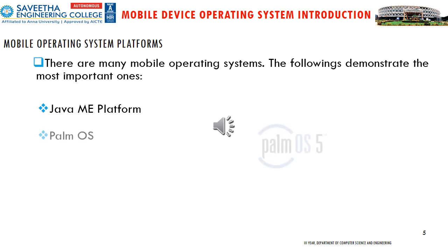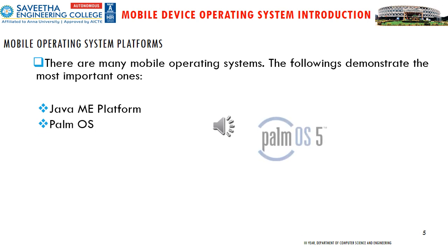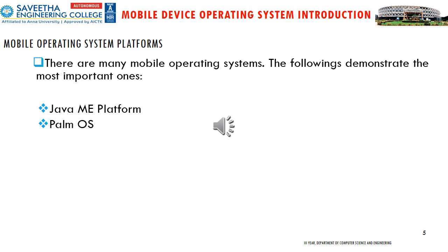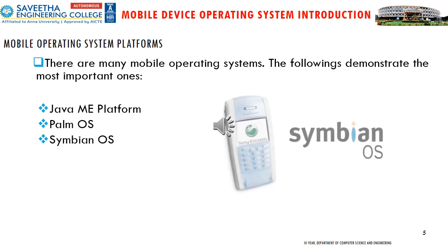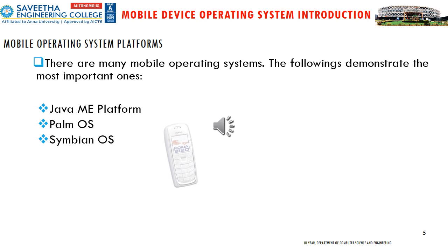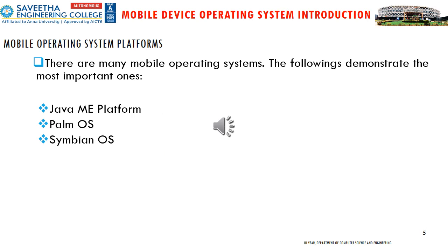Palm OS is a discontinued mobile operating system initially developed by Palm, Incorporated, for personal digital assistants in 1996. Palm OS was designed for ease of use with a touch screen-based graphical user interface. Symbian OS was originally developed as a closed source OS for PDAs in 1998 by the Symbian Ltd. Consortium. Symbian was used by many major mobile phone brands like Samsung, Motorola, Sony Ericsson, and above all by Nokia.